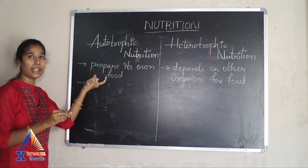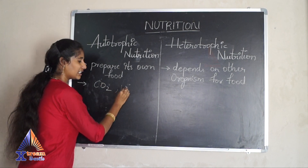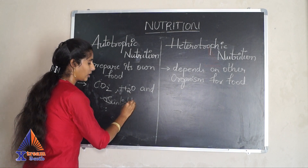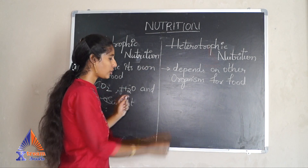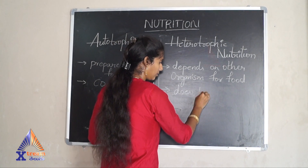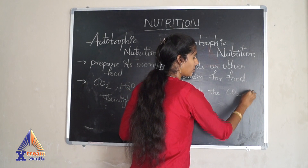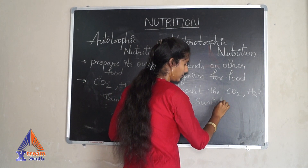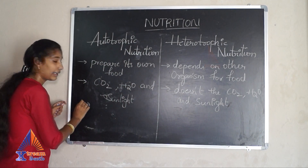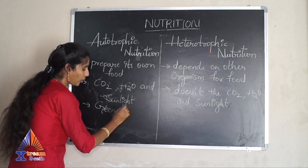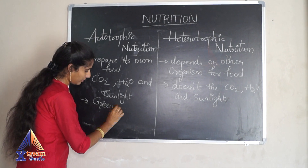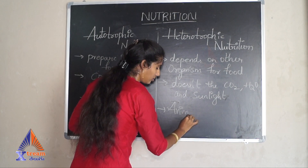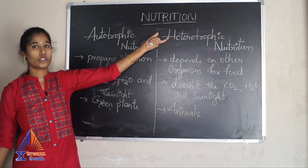In autotrophic nutrition, the organism takes carbon dioxide, water, and sunlight to prepare its own food. But in heterotrophic nutrition, it does not use carbon dioxide, water, and sunlight to prepare food. Green plants undergo the autotrophic mode of nutrition, while animals undergo the heterotrophic mode of nutrition.